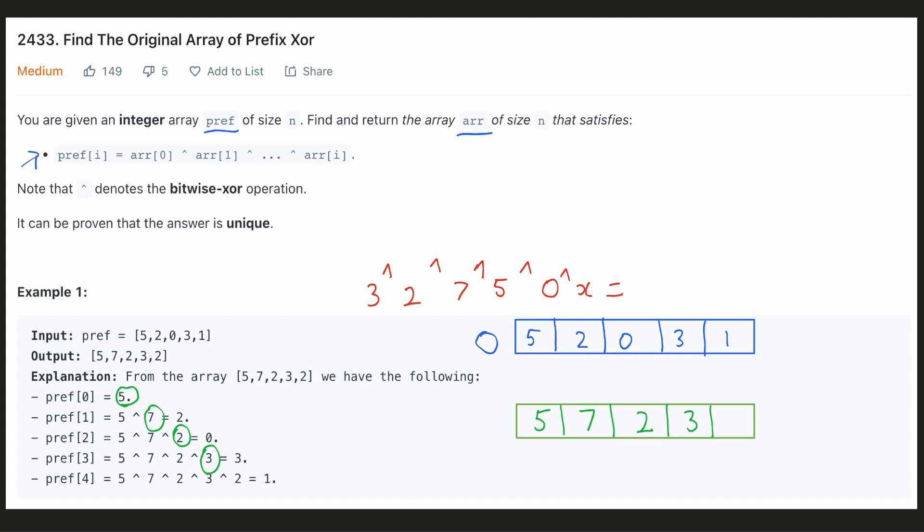And for the last number in the array we have to find a number such that 3 xor 2 xor 7 xor 5 xor that number will result in 1. That number will be 2. Now let's try to think how we can generate the original array from the prefix array.